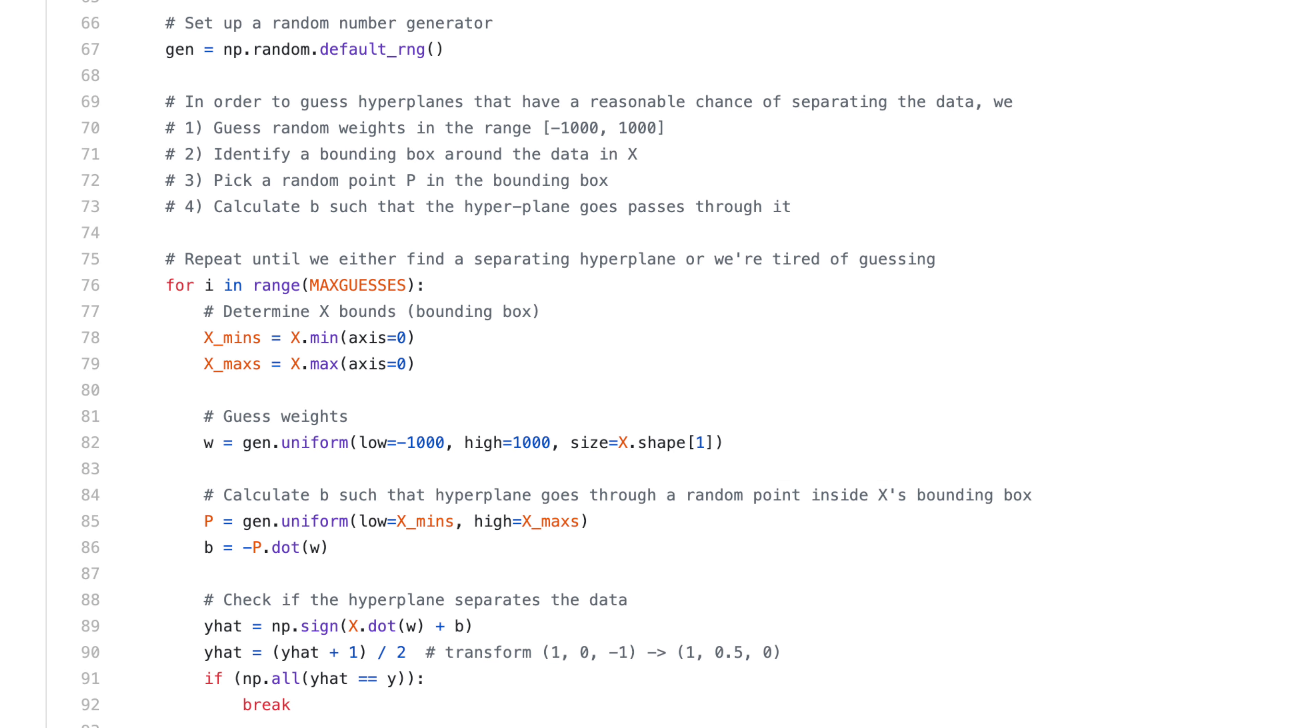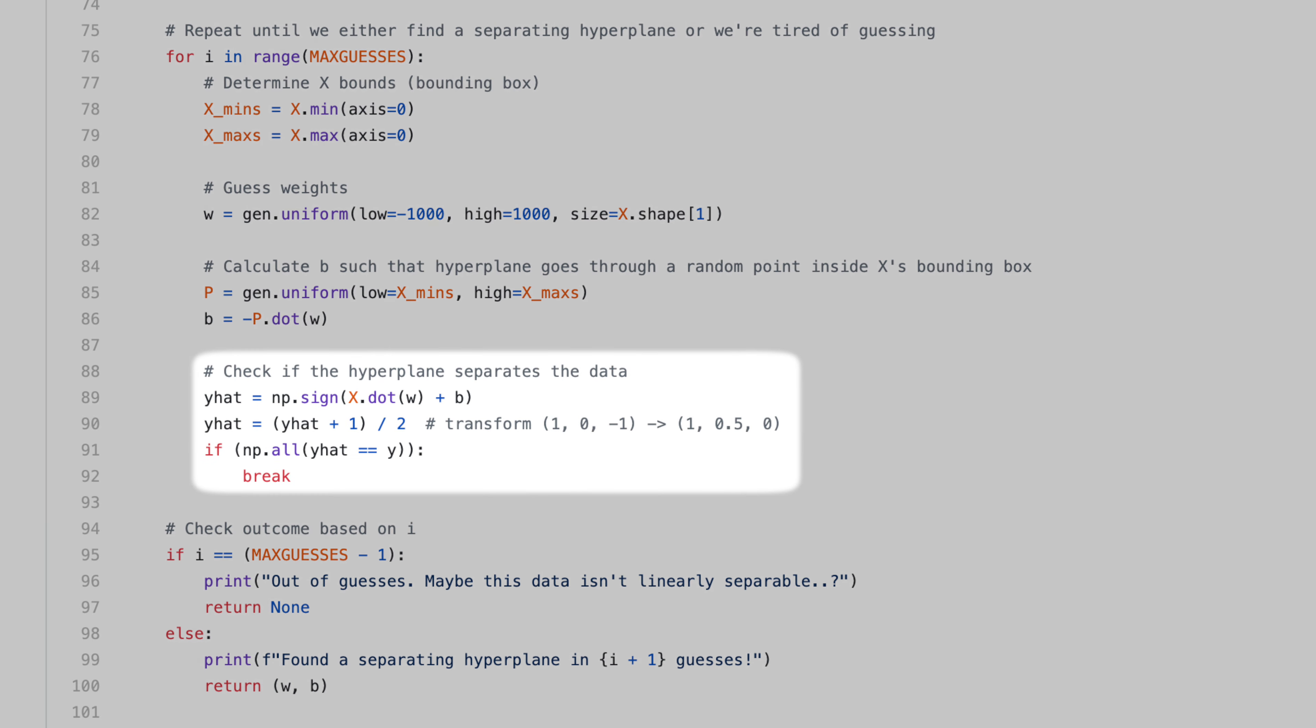Keep in mind that if the hyperplane goes through p, it means that w dot p plus b equals zero, so b equals negative w dot p. Lastly, I check if the hyperplane separates the data. So, if the hyperplane separates the data, it means where y equals one, x dot w plus b should be positive, and where y equals zero, x dot w plus b should be negative. We can imagine the hyperplane making a prediction about each point. And if all the hyperplane's predictions match the true labels, we know it's a separating hyperplane. Note that np dot sign returns one if the input is positive, zero if the input is zero, and negative one if the input is negative. And since our data is labeled with ones and zeros, not ones and negative ones, we have to transform the predictions into ones and zeros as well. Also note that if a point lies directly on the hyperplane, meaning x dot w plus b equals zero, then we consider it misclassified.